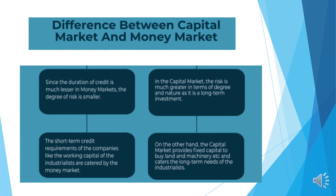Next, the duration of credit is much lesser in money markets. The degree of risk is smaller, meaning risk and return are lower in money markets. On the other hand, in the capital market, the risk is much greater in terms of degree and nature, as it is a long-term investment.